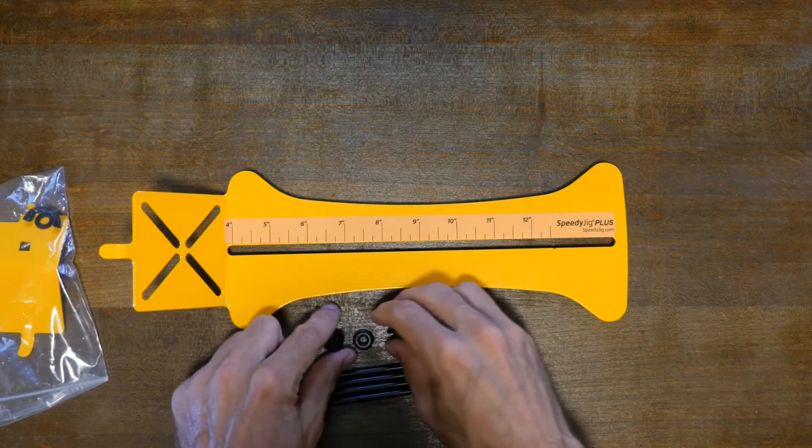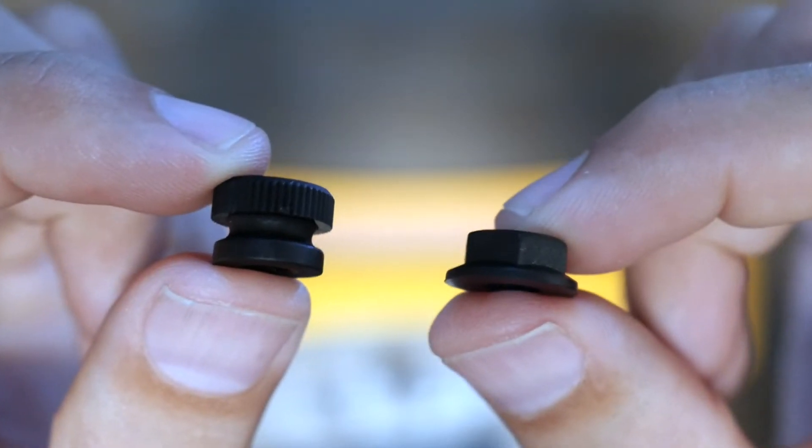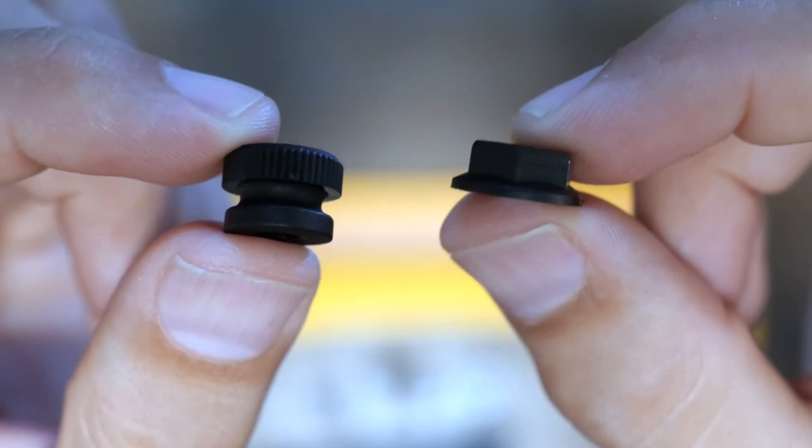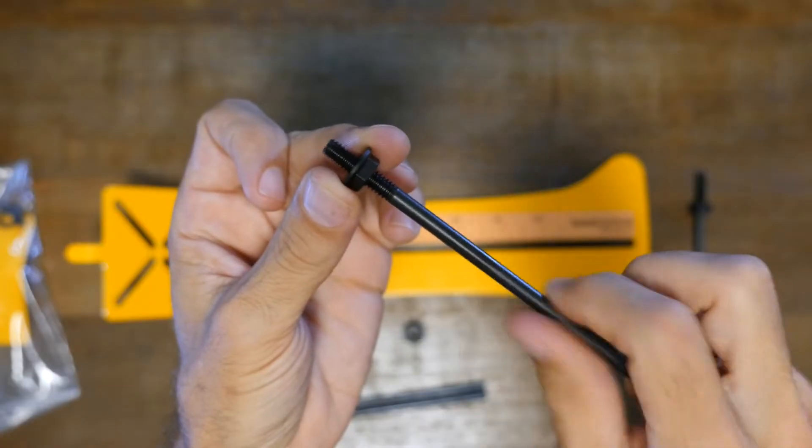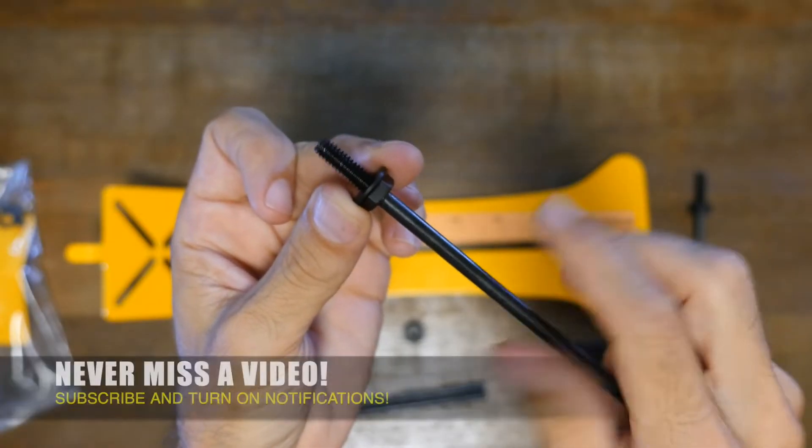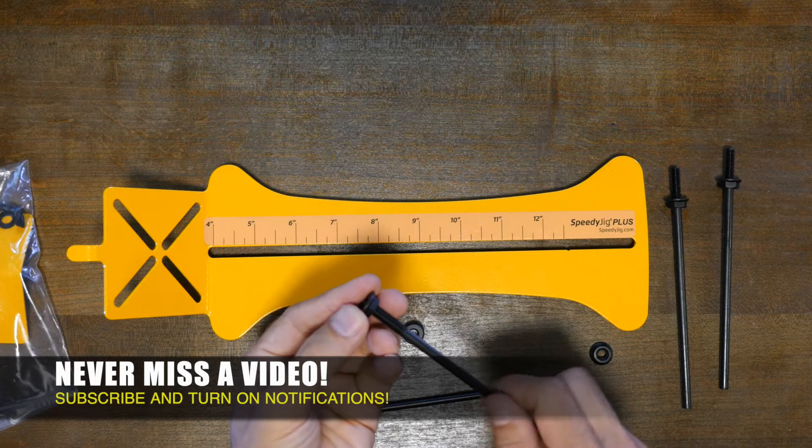Next, I unpacked the Monkey Fist jig parts. There were two different types of threaded nuts, four of each. One had a hex nut shape and the other was more rounded. I threaded the hex nuts onto the rods first because they go on the top side of the jig.